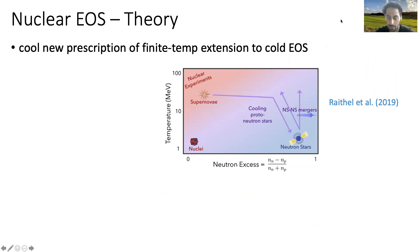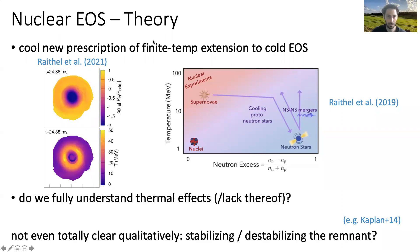Moving to the theory side: one cool thing that caught my attention is this new prescription for finite temperature effects — basically extending cold equations of state to finite temperature. This is important for mergers because merger remnants actually do reach temperatures of tens of MeV, and so you can't completely ignore the thermal effects. But I don't think we fully understand thermal effects or lack thereof. Does thermal pressure have any impact? How does it impact things? There's been recent work starting to investigate this, but I don't think we fully understand the problem yet.